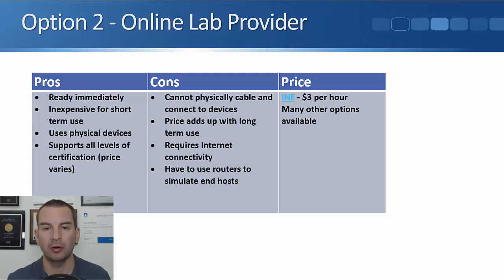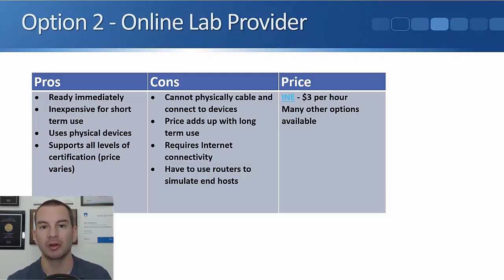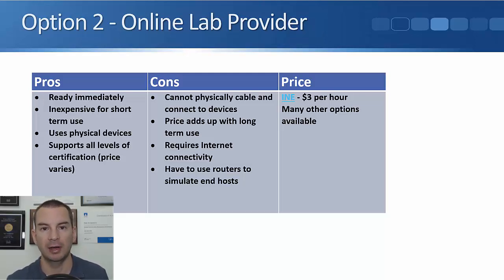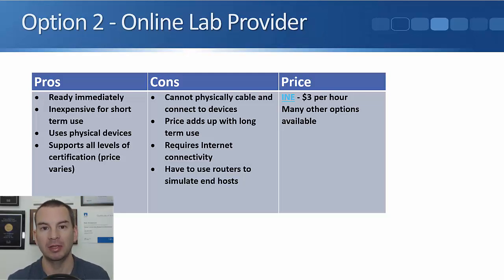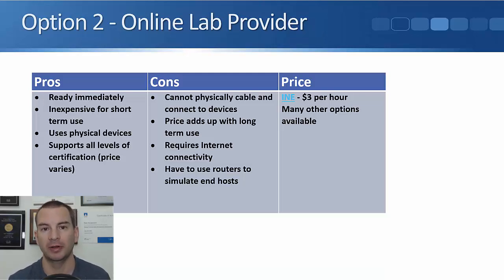Another benefit is that it supports all the different levels of certification. Most online lab providers have different labs depending on what certification you're studying for — for example a CCNA lab, a CCNP lab, a CCIE lab, and different tracks like routing and switching or security. There are different pricing points for each lab type, with the CCNA lab being the least expensive. If you go on to study for the CCNP later, you can use the CCNP lab from the same provider.